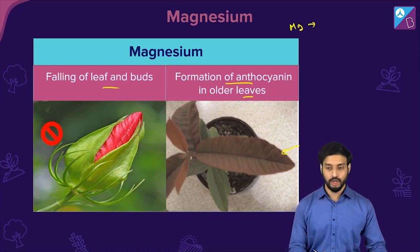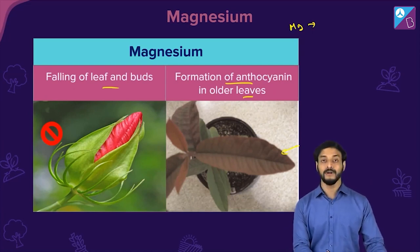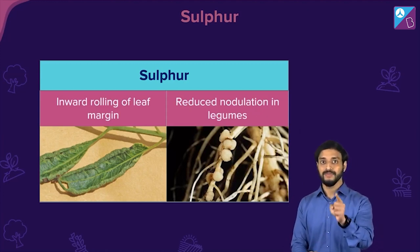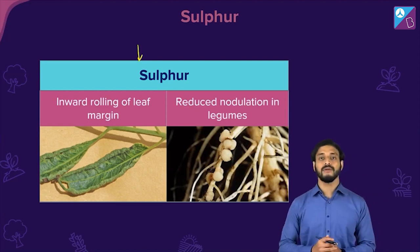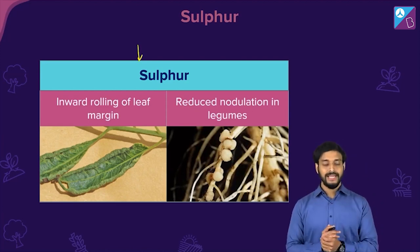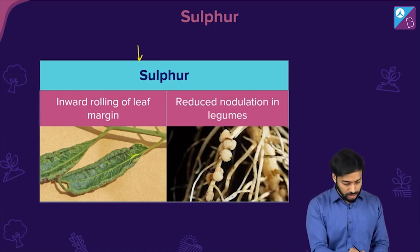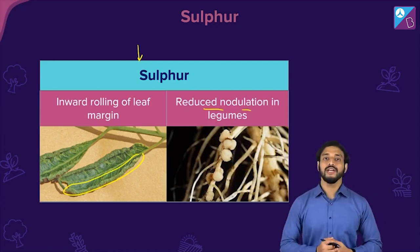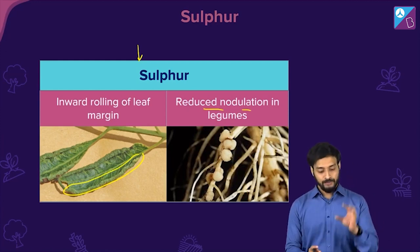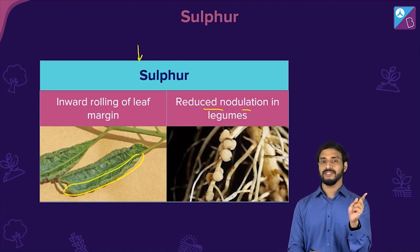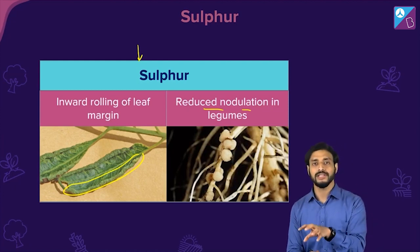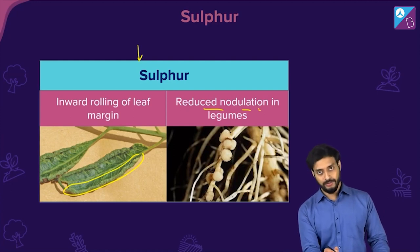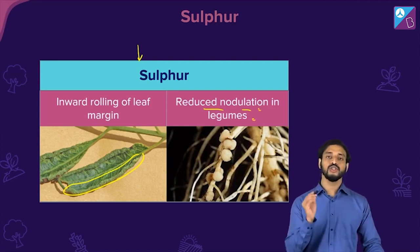Sulfur deficiency symptoms include inward rolling of the leaf margins — the margins of the leaves start rolling inwards. There is also reduced nodulation in leguminous plants. Nodule formation is very important for nitrogen fixation — the conversion of atmospheric nitrogen into forms that can be utilized by plants — so reduced nodulation in legumes is a key sulfur deficiency symptom.